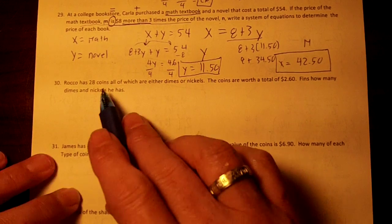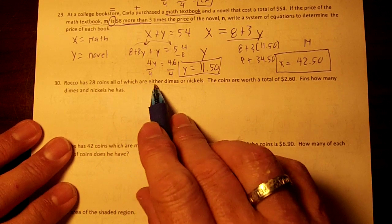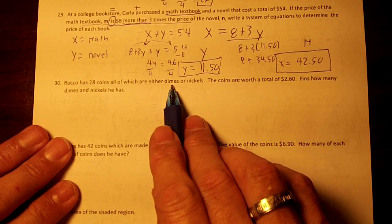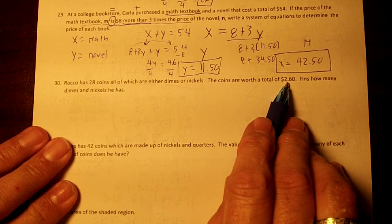Okay, number 30. Rocco has 28 coins which are either dimes or nickels. The coins are worth a total of $2.60.